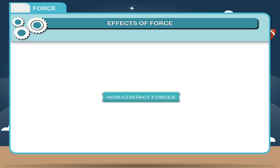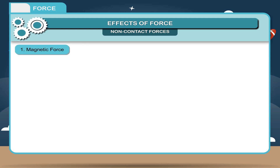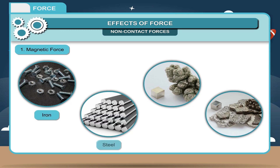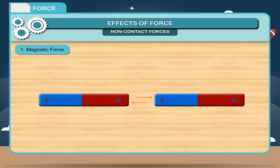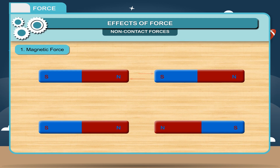Non-contact forces are those types of forces applied to two objects when they are not in physical contact with each other. Magnetic force: The force by which a magnet attracts or repels objects like iron, steel, nickel, and cobalt is called magnetic force. A magnet attracts another magnet when unlike poles are brought near each other, and repels when like poles are brought near each other.